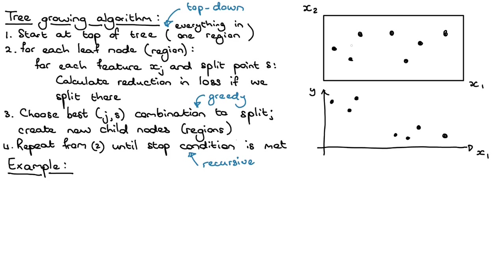Here we have some training data points — seven of them — with two features, X1 and X2. For each of the training points we also have a Y value, a continuous number we're trying to predict because we're doing regression. To make it easier to visualize, I'm plotting Y, the output target value, as a function of X.